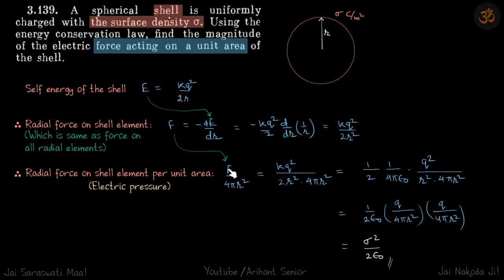So we can rewrite this. So we'll put the value of F here, which is kQ squared by 2R squared by 4 pi r squared. So we can rearrange it and write it like this.